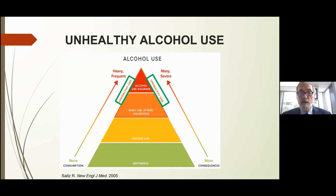It's a pyramid, and at the base you can see abstinence. That's to remind us that in primary care patients, a large minority in the US don't drink — and so that can be normative behavior. There's another sizable group with low-risk use of alcohol. Toward the top of the pyramid we see two groups: risky use and alcohol use disorders. Both comprise 'unhealthy alcohol use,' a term you'll hear me mention a few times during the talk.